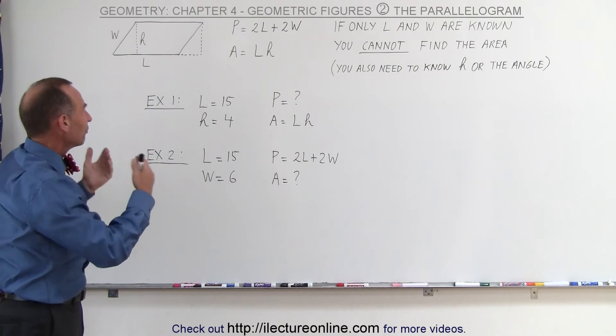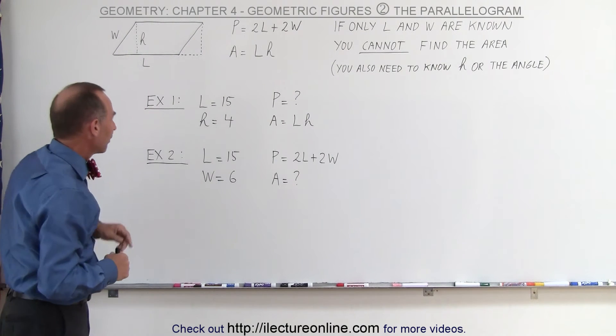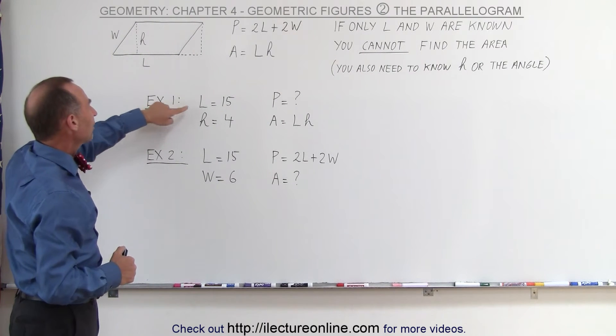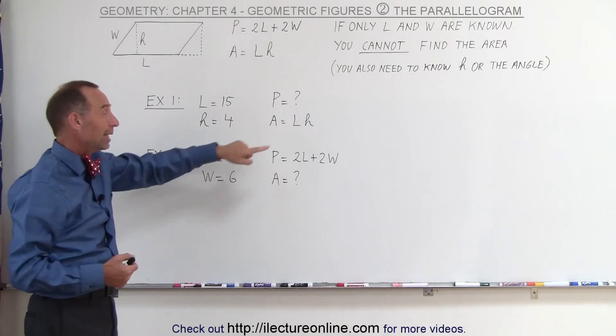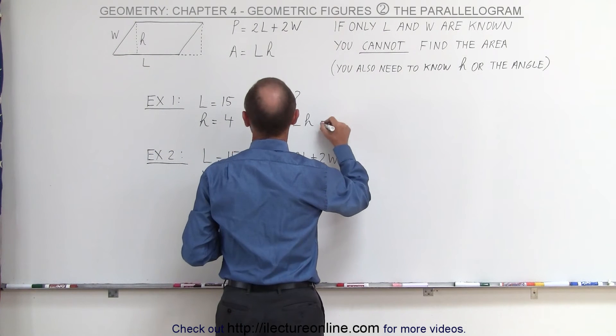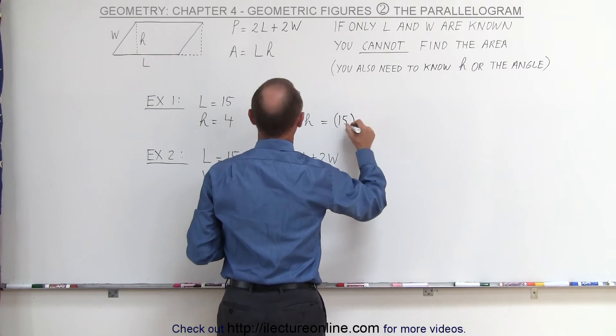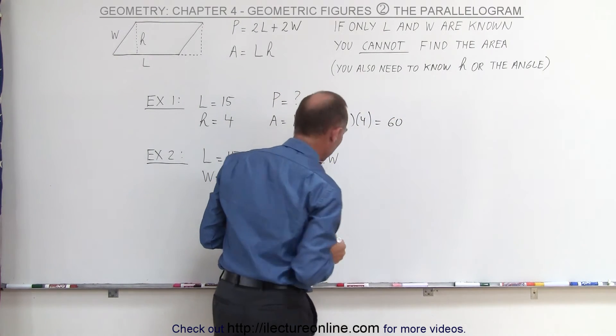Typically, they will give you the height so you can find the area. Let's do a few examples. In our first example, we're given the length of the long side and the height. That means we can find the area, and the area is going to be the length times the height. In this case, that will be 15 for the length, 4 for the height, so that would be 60 square units.